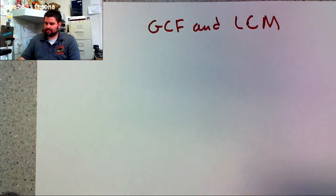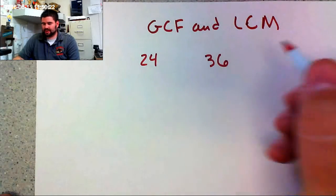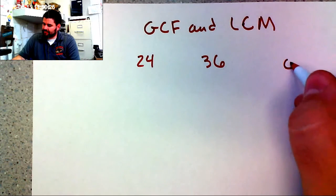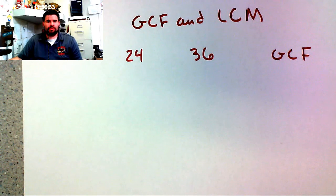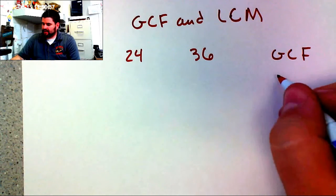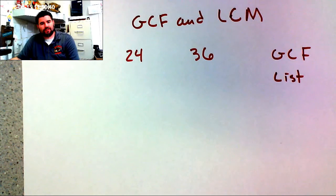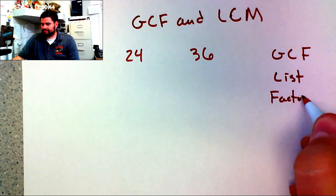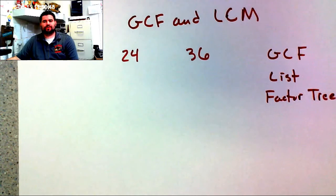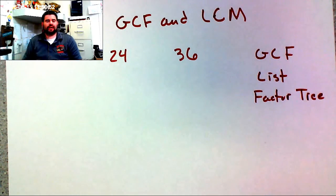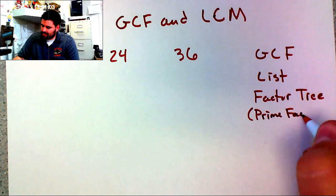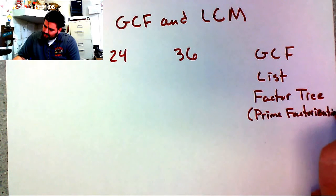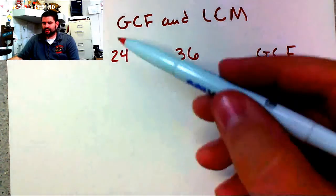Let's start off with the numbers 24 and 36, and I'm going to find the GCF first. There are two methods that most people use when finding the GCF: making a list of all the factors, or making a factor tree. When they make a factor tree, they break it down to the prime factors — that's called prime factorization — and that gives them leverage to help find the GCF.